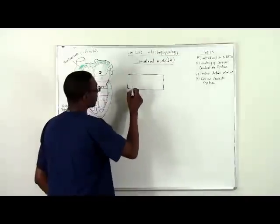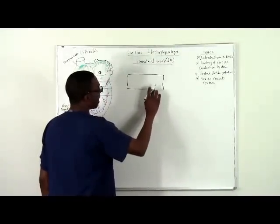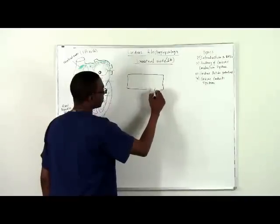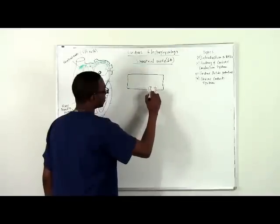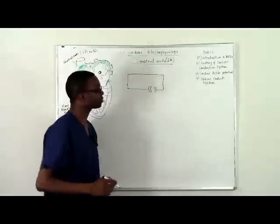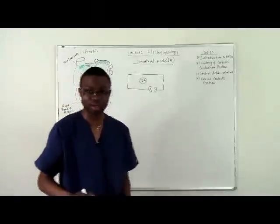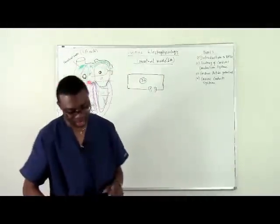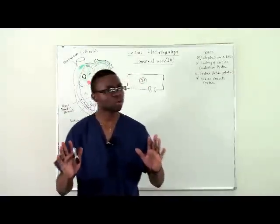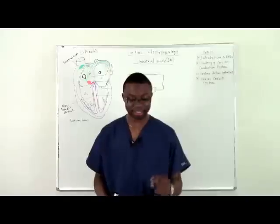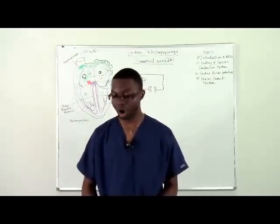Cells have a membrane, and on this membrane they have protein channels. I'm going to draw a protein channel here — that's a protein channel in this SA node cell. Now, this SA node has an unstable resting potential. This is a good point to introduce the concept of resting membrane potentials of cells.